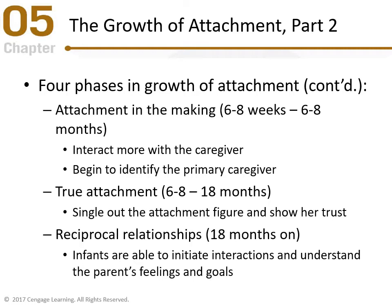The fourth phase is reciprocal relationships, from 18 months on. This is when children can start initiating interactions and understand the feelings of other people. When talking to mom and dad, they can realize that mom and dad have feelings, can be sad, have goals and wants. Remember that 18 months is that magical age — recognition of self, increased cognition, beginning language skills, the theory of mind. They're able to initiate interactions and understand parents' feelings and goals because they have increased cognition and beginning language skills.